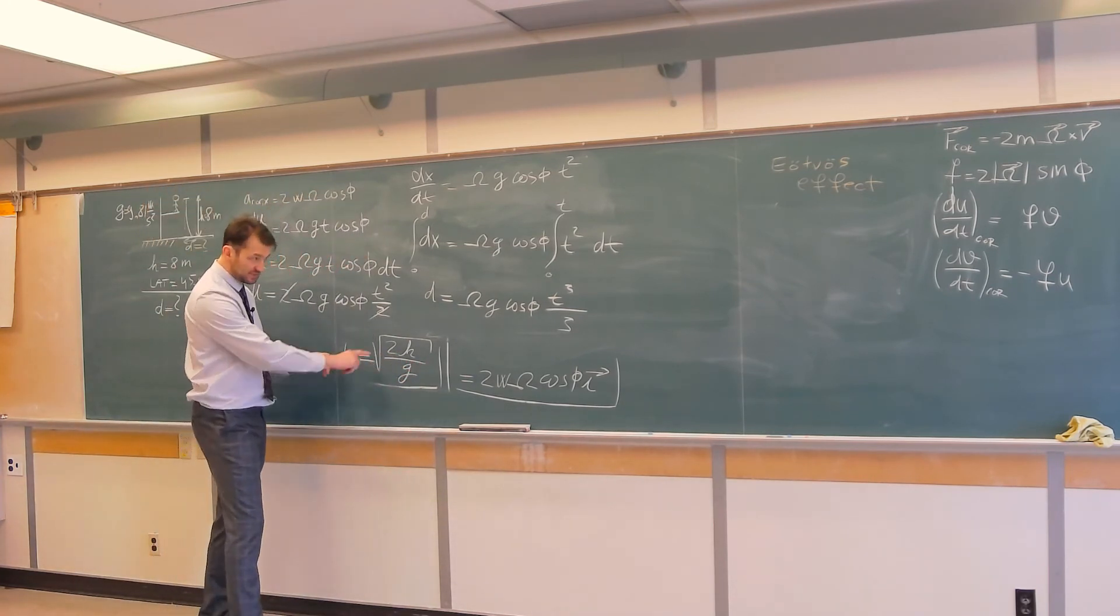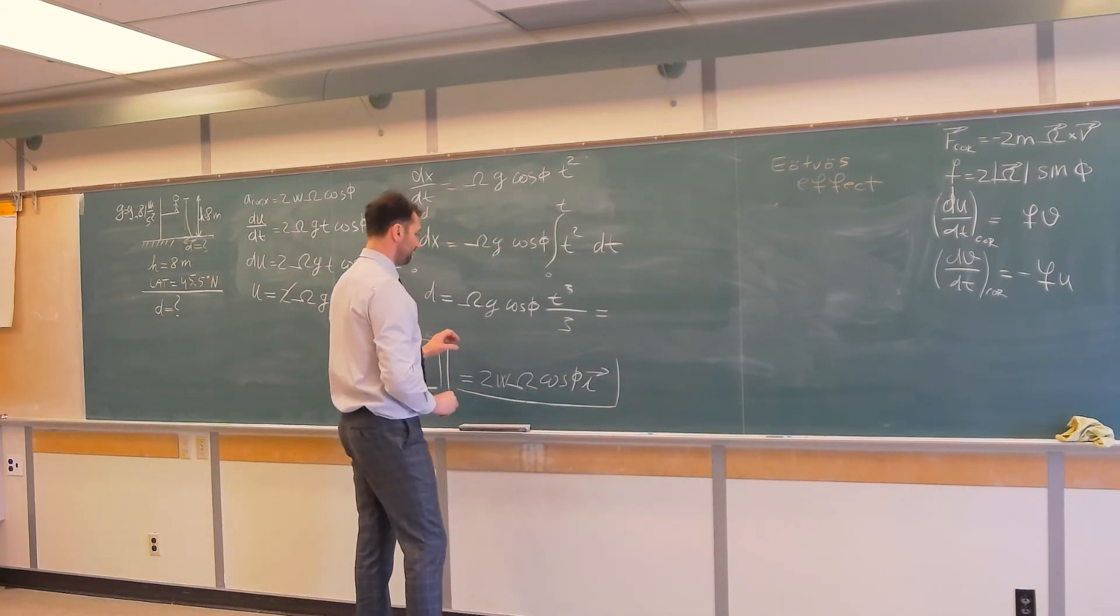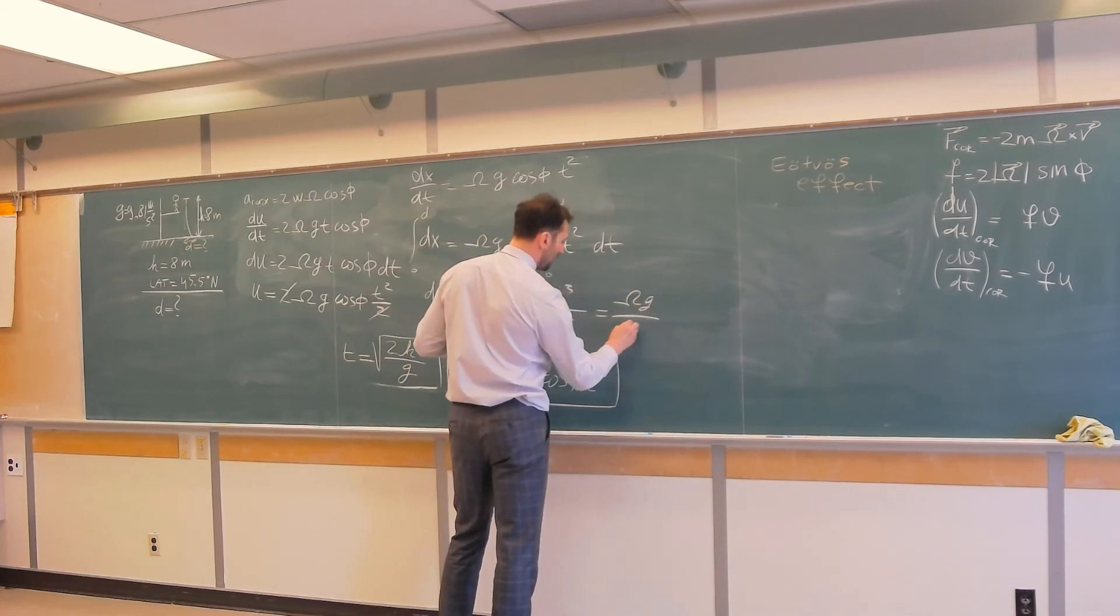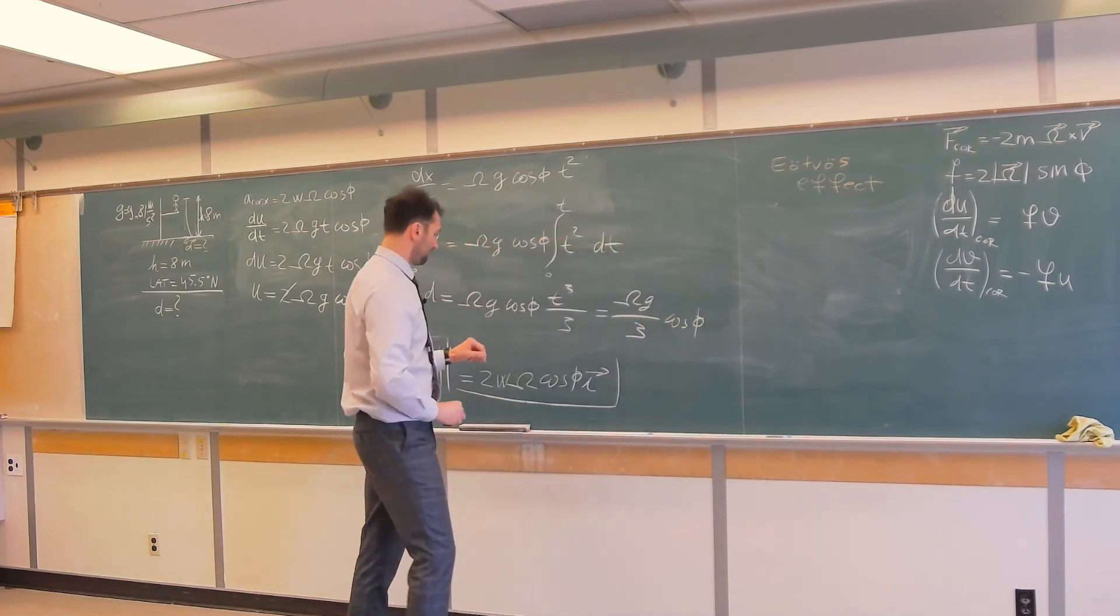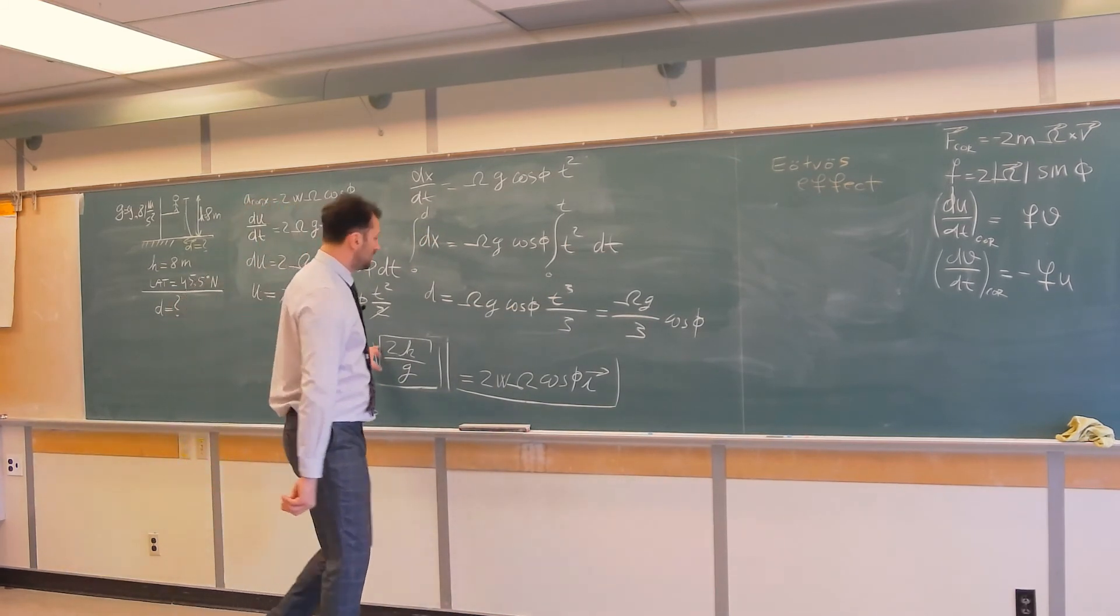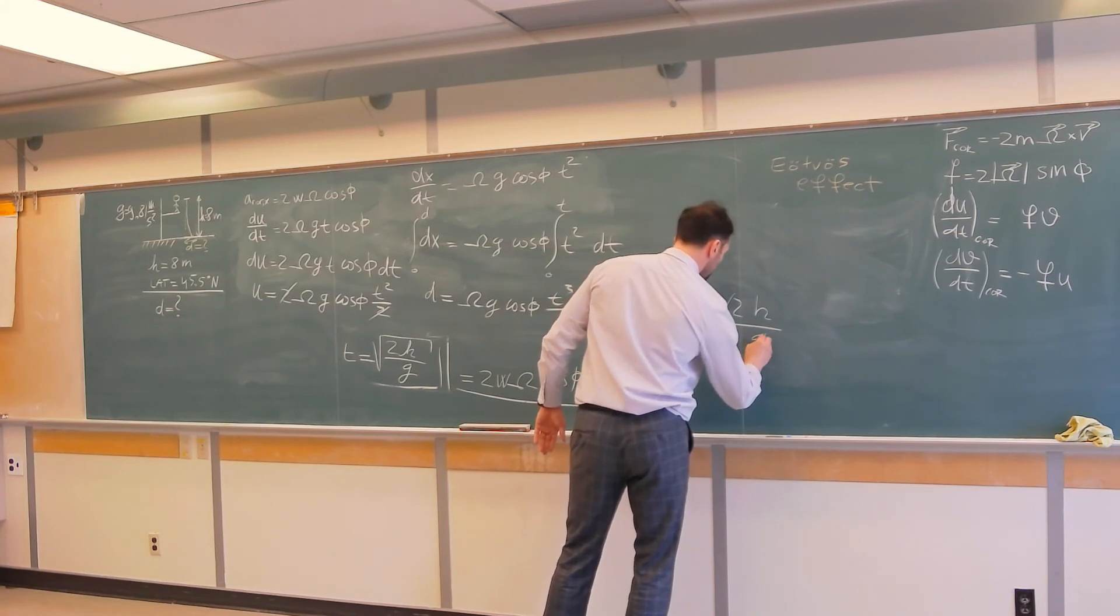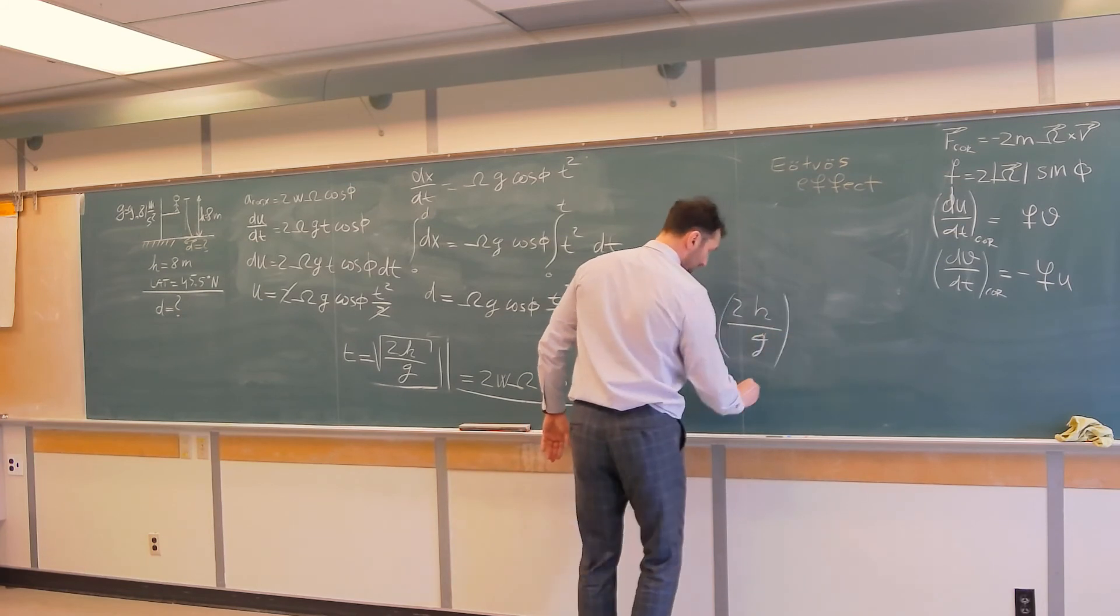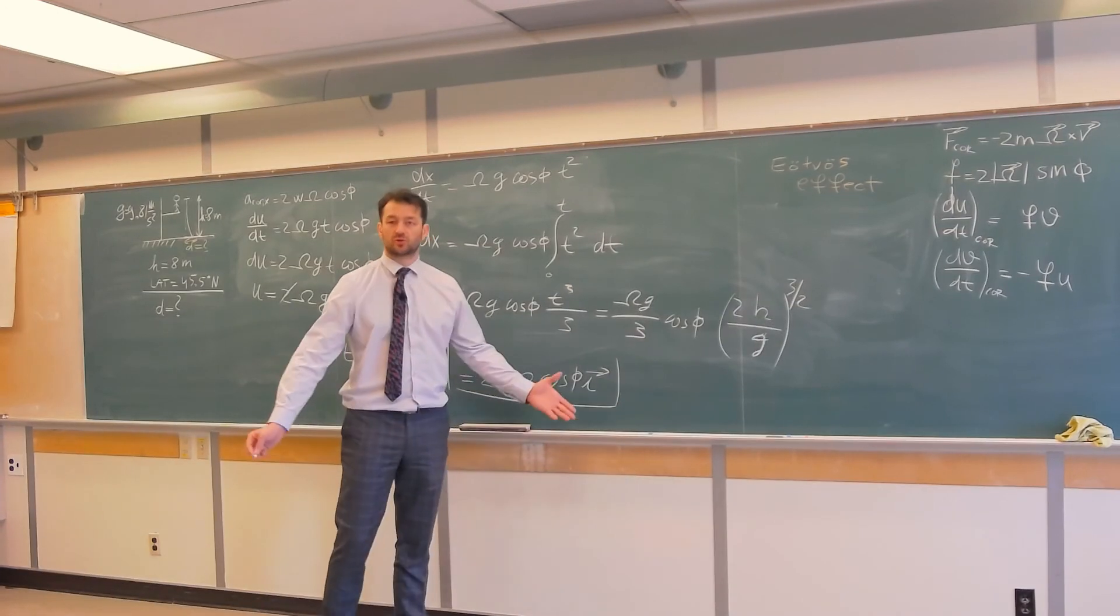Finally, I substitute this t over there. And I get that this result is omega g over 3 cosine phi t cubed. So that would be 2 times h over g to power 3 over 2. Cubed, so cubed and square root is 1 over 2, we get 3 over 2. And now we just need to plug in numbers because we solved the problem.